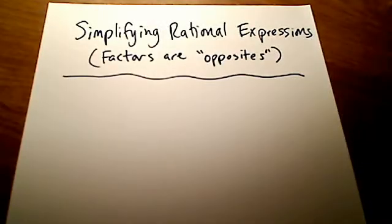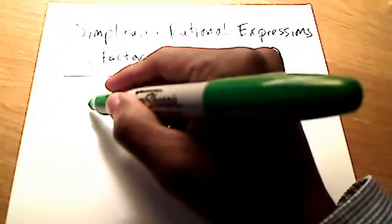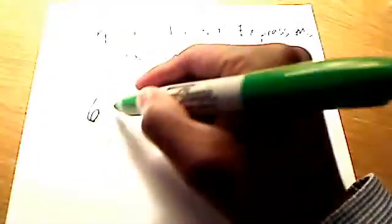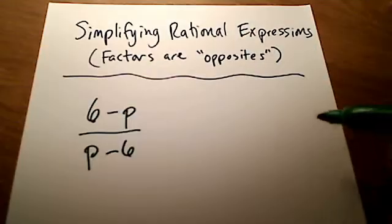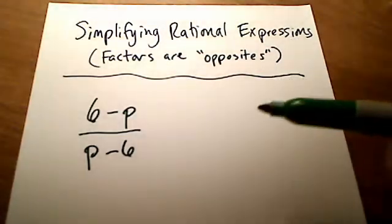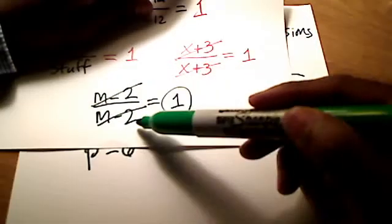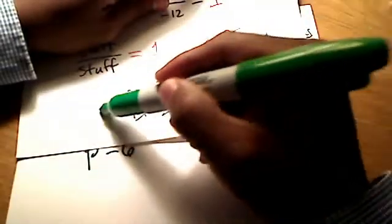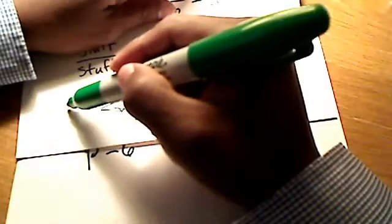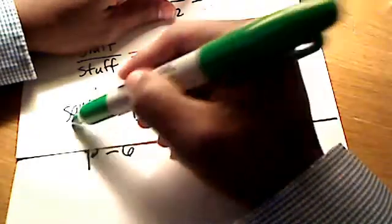So take a look at this example now. Let me show you what I mean by opposites. How about 6 minus p over p minus 6? Now, I hope you see that this, unlike, let me pull this back here, unlike m minus 2 over m minus 2, they were exactly the same. These two binomials were exactly the same.